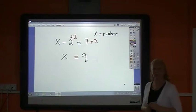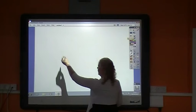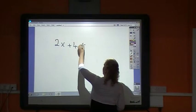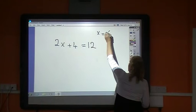Now let's go one step more. If I have 2x plus 4 equals 12. I'm still looking for x equals a number. x on its own.